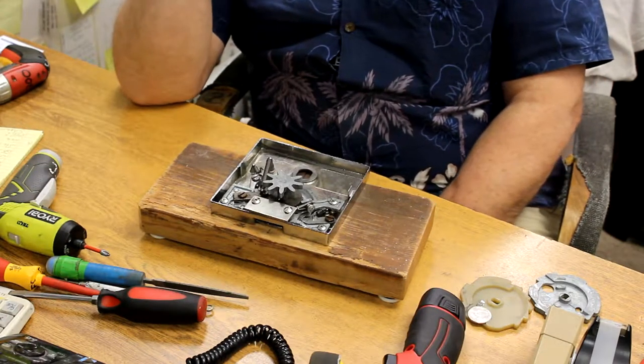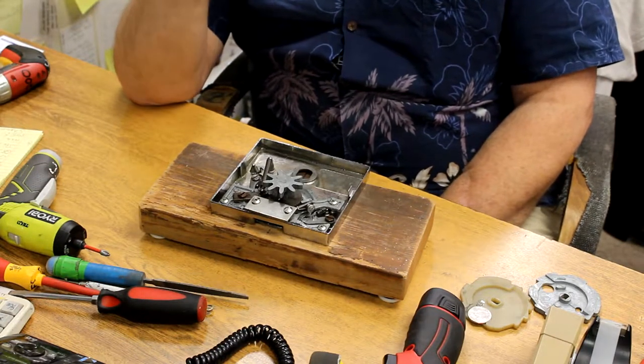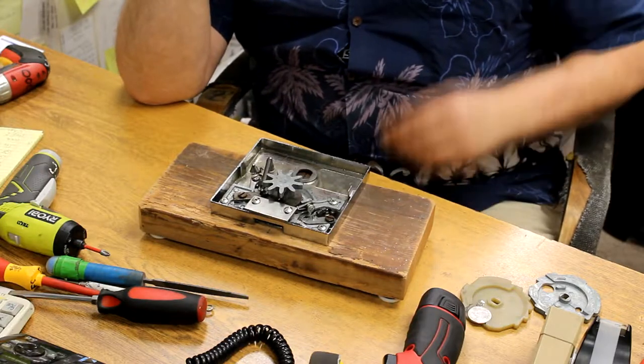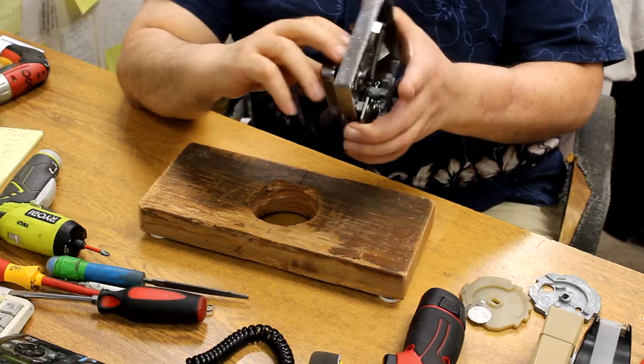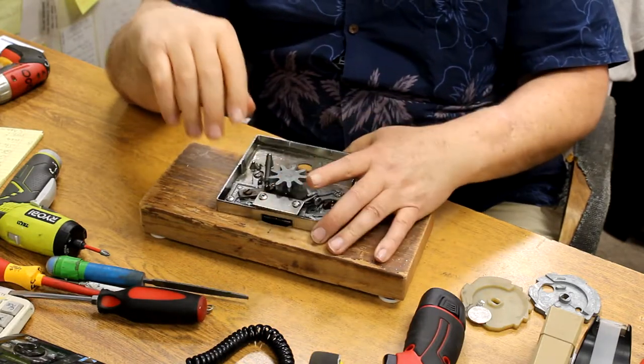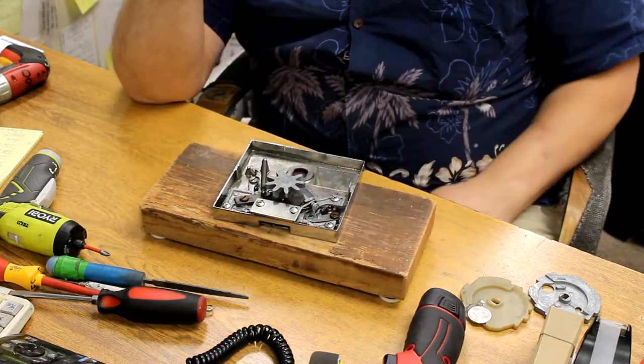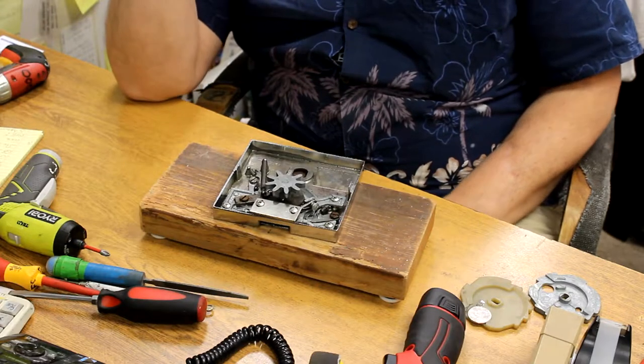All right, my name is Frank Campbell and this is Wholesale Vendors. What we're going to do today is take apart this Victor 77 mechanism and make it into 50 cents. So we'll get started.